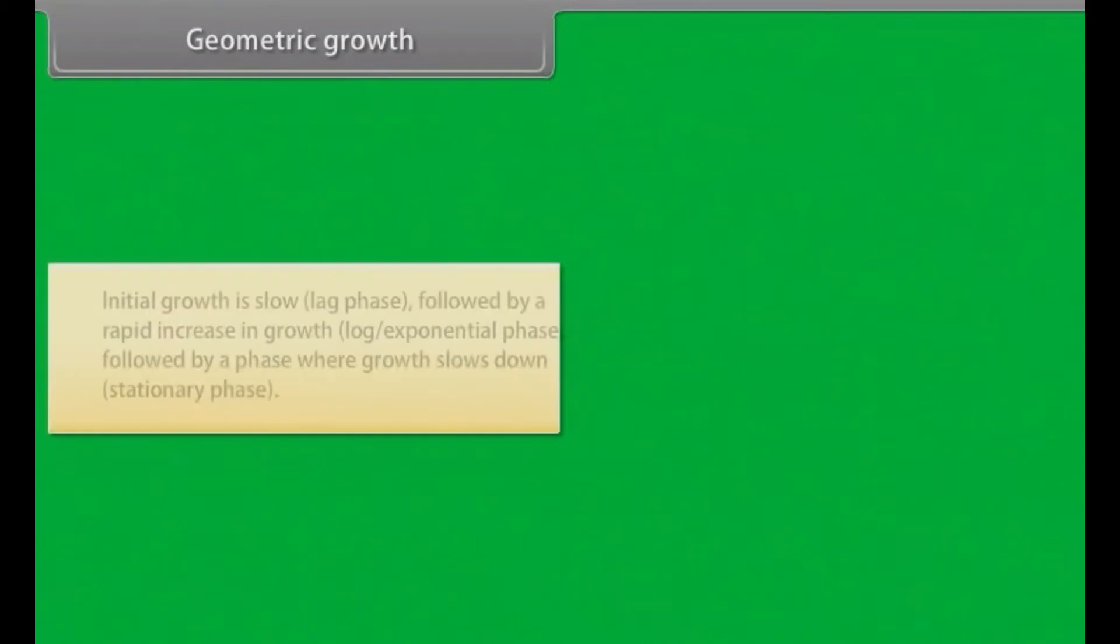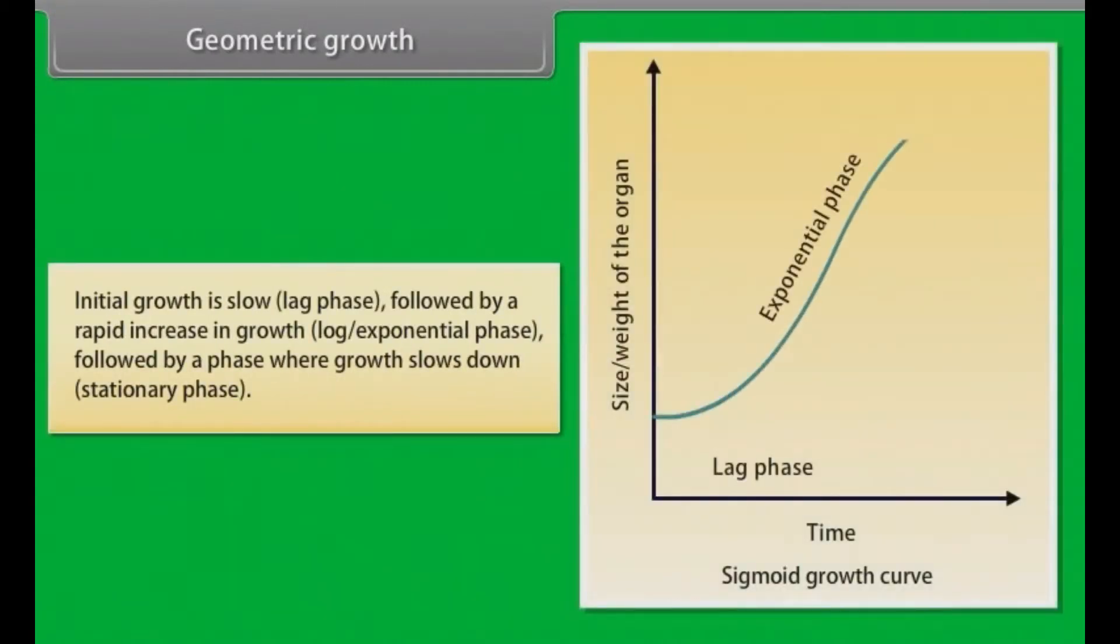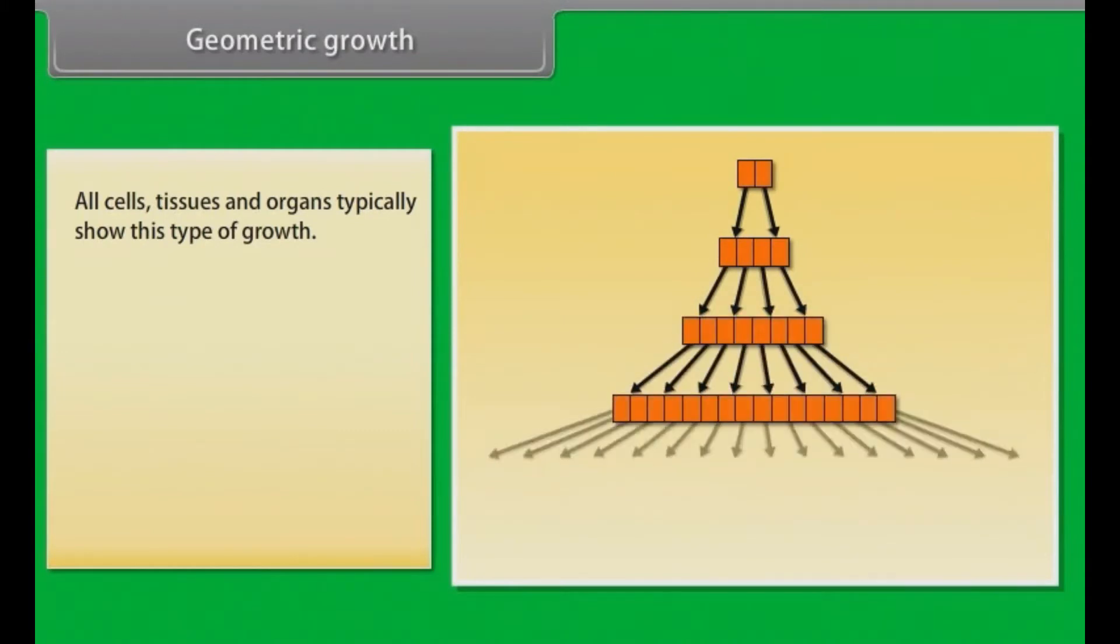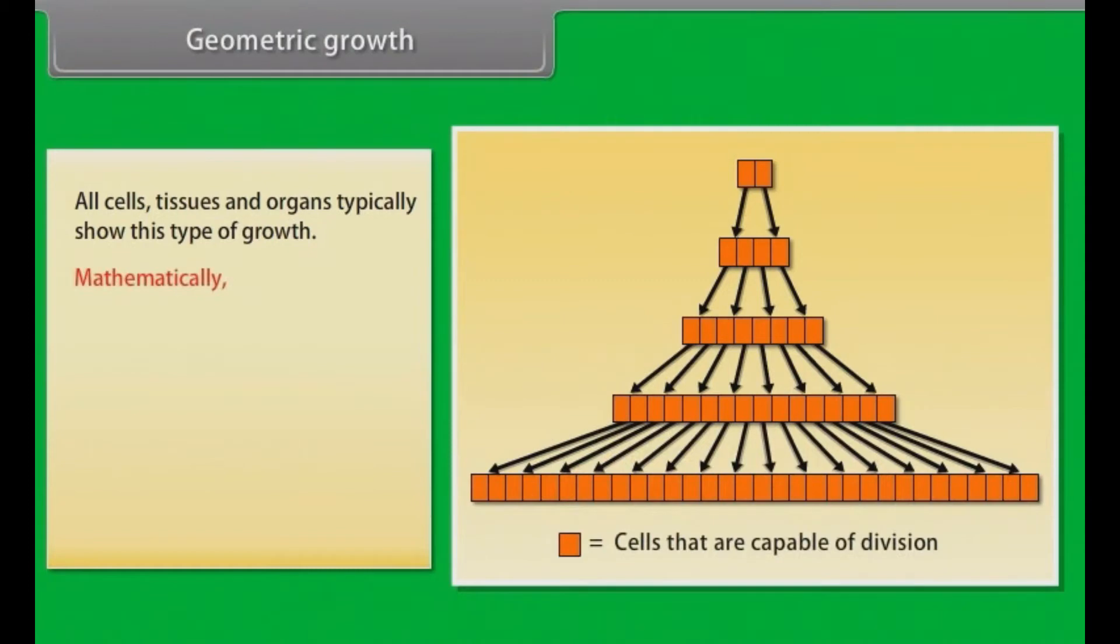Geometric growth: Initial growth is slow, followed by a rapid increase in growth, followed by a phase where growth slows down. All cells, tissues and organs typically show this type of growth. Mathematically, W1 is equal to W0 into exponent Rt. W1 is equal to final size. W0 is equal to initial size. R is equal to growth rate. T is equal to time of growth. E is equal to base of natural algorithms.